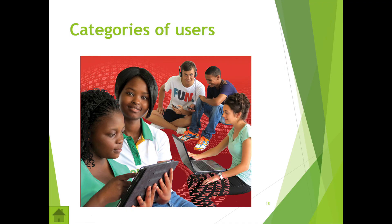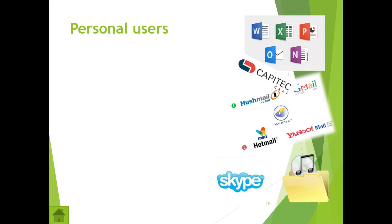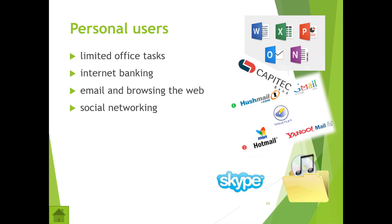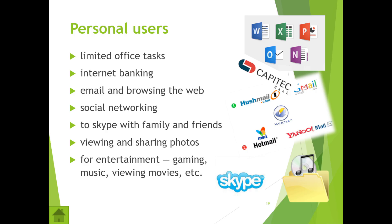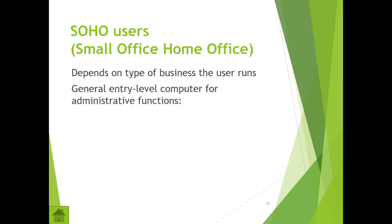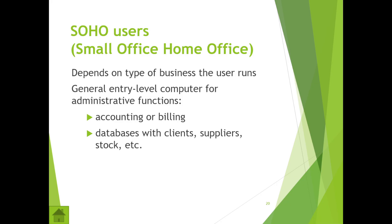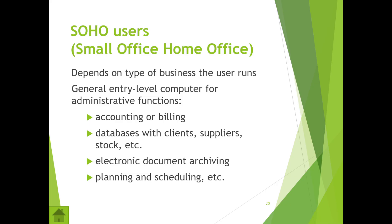Categories of users is very important to the Grade 12 CAT theory syllabus. There are four types. A personal user does limited office tasks, internet banking, email, browsing, social networking, Skype, viewing and sharing photos, and entertainment. A SOHO — small office home office — user uses entry-level computers for admin functions like accounting, client databases, electronic document archiving, and planning and scheduling.